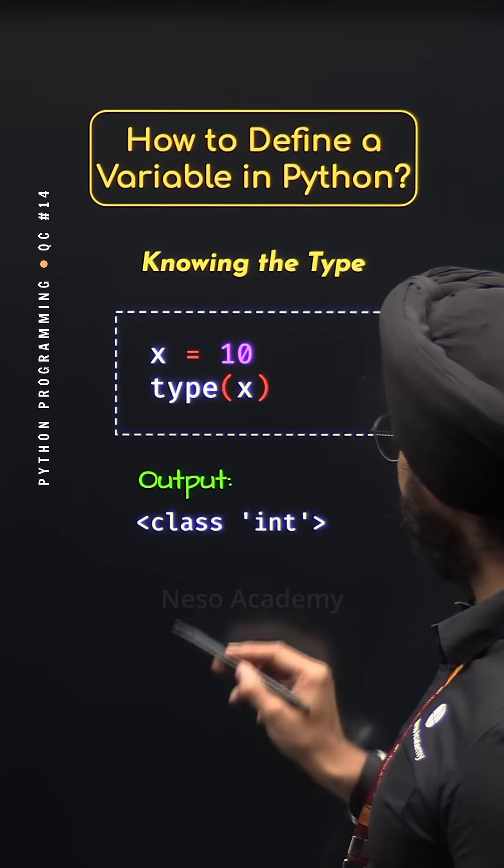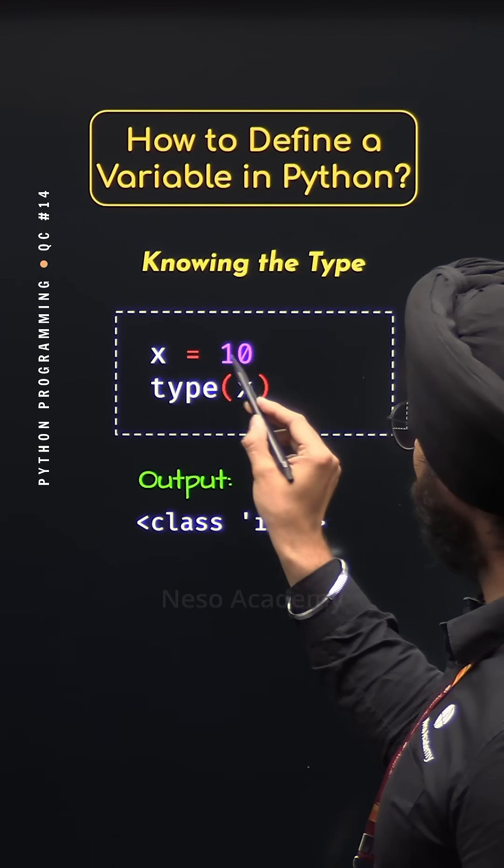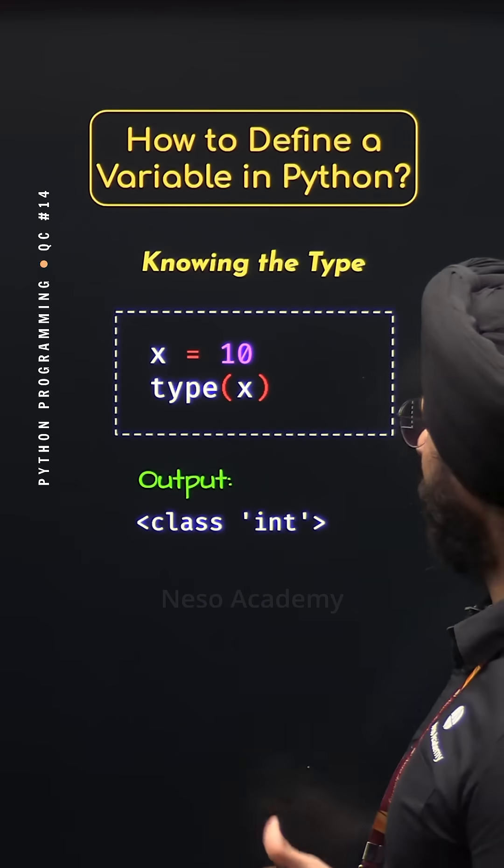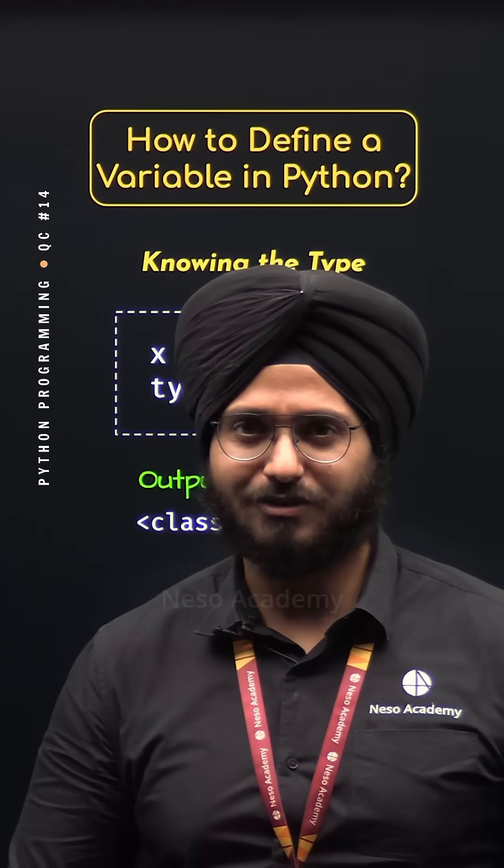By execution, we will get the output as class int because the type of this variable is int as it is storing an integer value. So this is how we can know the type of the variable and I hope it is clear how to define a variable in Python.